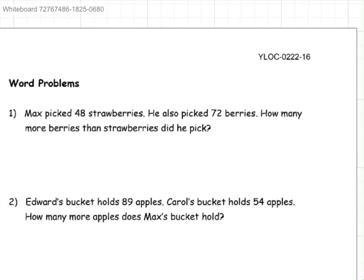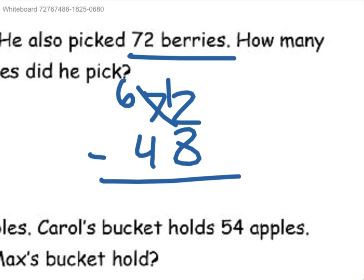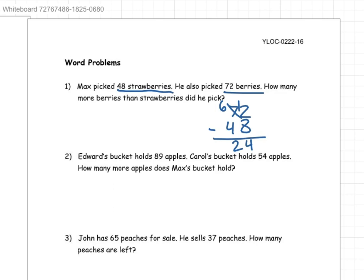Word problems. Max picked 48 strawberries. He also picked 72 berries. How many more berries than strawberries did he pick? So 72 berries minus 48. You turn this into a 6, put the 1 over here. 12 minus 8 is equal to 4. 6 minus 4 is equal to 2. So 24 more berries than strawberries.